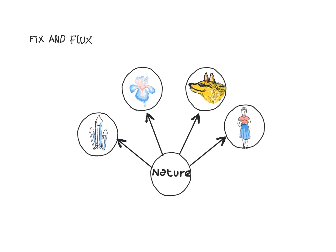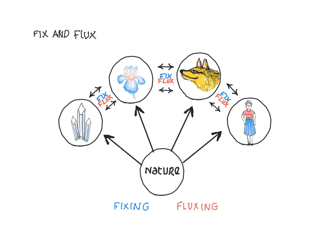It's commonly thought that the laws that govern transformational processes of the mineral, plant, animal, and human kingdoms are all quite different. This video presents another way to think about this by identifying what are known in alchemy as fixing and fluxing processes, which are shared in common by all four kingdoms.